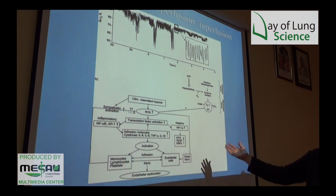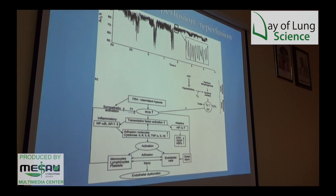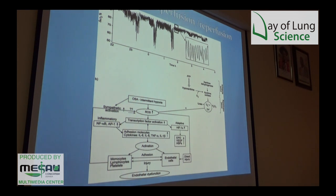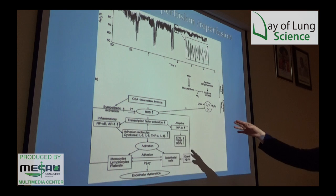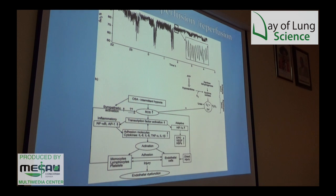Endothelial dysfunction occurs — there's adhesion, so you can get increased risk of clots. Lymphocytes are activated and platelets become aggregable, again causing more clotting. Reactive oxygen species — free radicals — can trigger off cancers and other conditions.